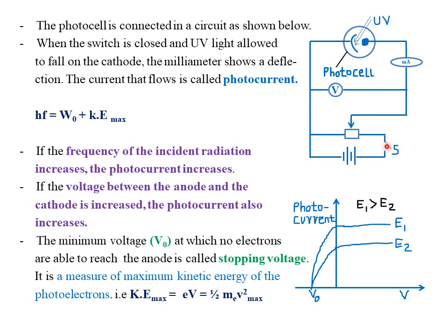We have a switch S which is used to close or open the circuit, and the source of power. When the switch is closed and ultraviolet light is allowed to fall on the cathode, the milliammeter shows a deflection. The current that flows is called the photocurrent.